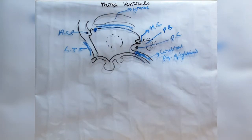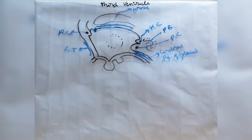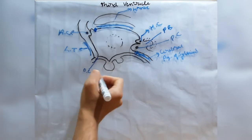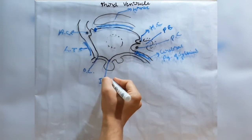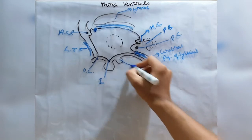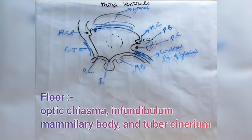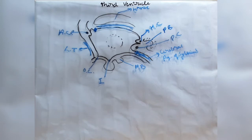The floor of the third ventricle is formed by the optic chiasma, the infundibulum or stalk of the pituitary gland, the tuber cinereum, and the mammillary body. These four structures — optic chiasma, infundibulum, tuber cinereum, and mammillary body — form the floor of the third ventricle.